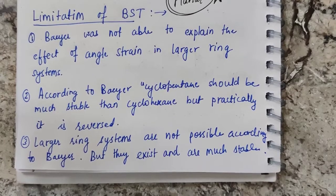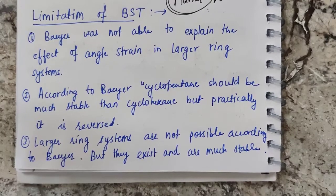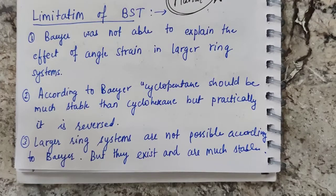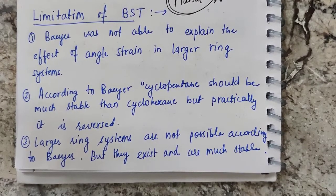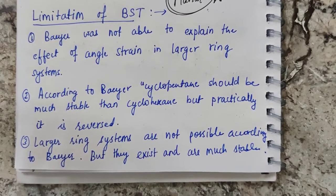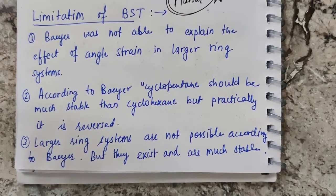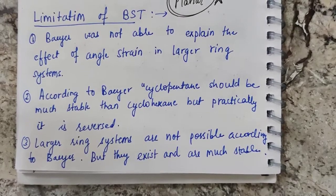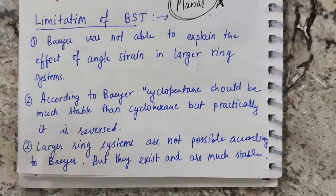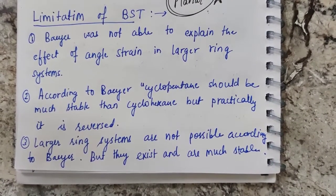A third limitation: Baeyer suggested that very large ring systems are not possible because they would have very high negative strain and thus cannot exist in nature. But this was also found to be incorrect. Larger ring systems do exist and are much more stable, and this stability is due to the puckered form in which these larger ring systems exist, instead of planar structures. That concludes our discussion of Baeyer's strain theory and the orbital picture of angle strain.